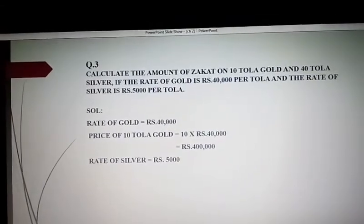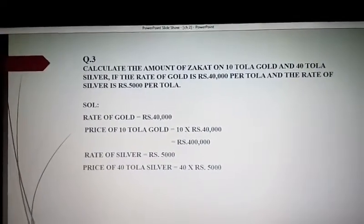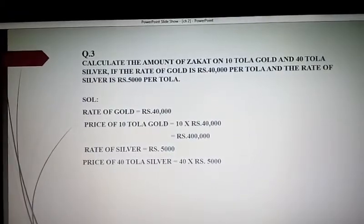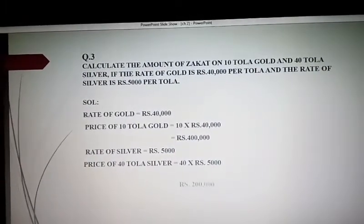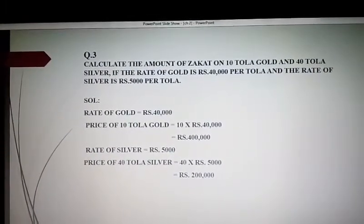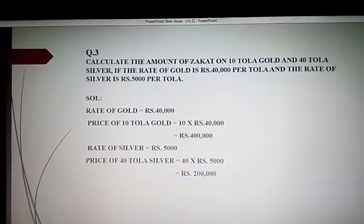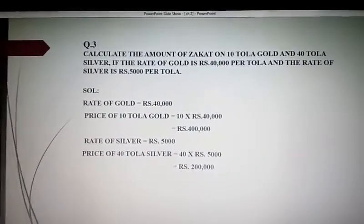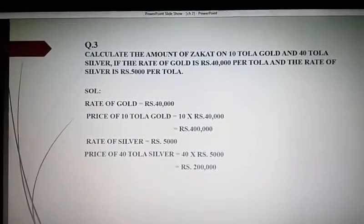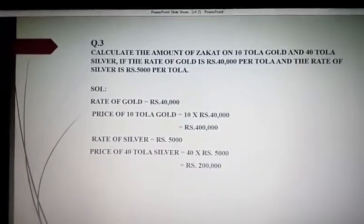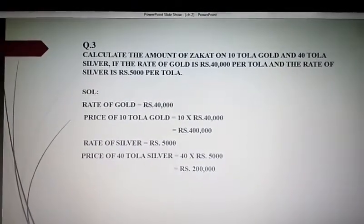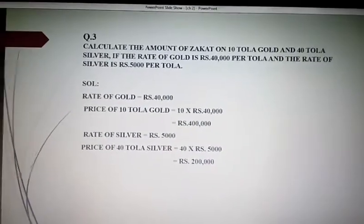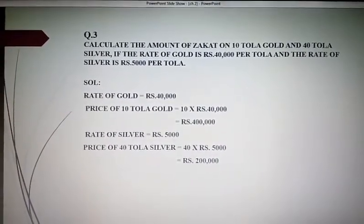جس طرح gold میں کیا تھا اسی طرح: price of 40 tola silver is equal to 40 multiplied by rupees 5,000, and we get rupees 200,000 as the price of 40 tola silver. اب زکاة ان دونوں amounts کو ملا کر نکالیں گے، so we have to add these two values.